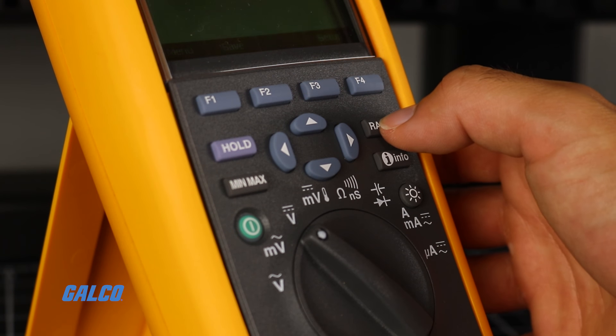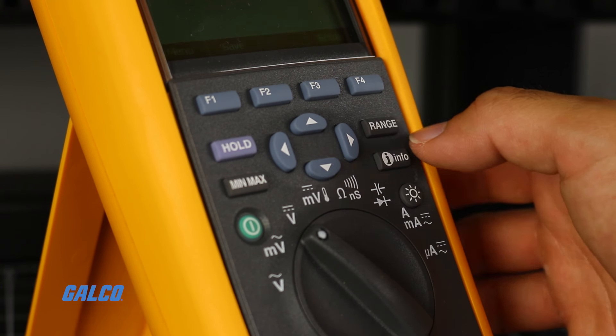In many cases, it's best to select the highest possible voltage range to prevent a possible overload, unless your meter has auto-ranging.